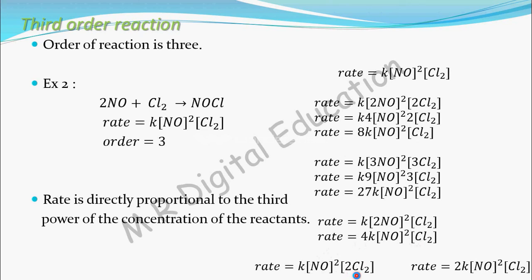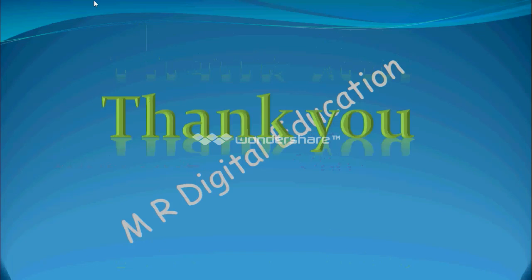Now I will keep the concentration of NO constant and increase the concentration of Cl₂ two times. Taking this 2 outside gives 2¹ = 2, so the rate will increase two times. In this case, the rate is increasing with respect to the concentration of Cl₂ only, not with respect to NO, because it is kept constant.